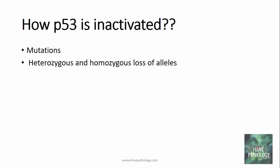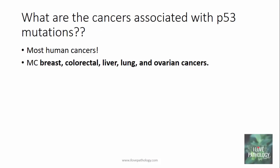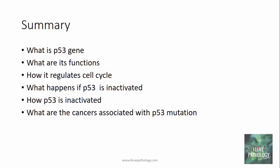How is the p53 gene actually inactivated? Basically, either by mutations or by loss of alleles — it could be heterozygous or homozygous loss of alleles. What are the cancers associated with p53 mutations? Most human cancers are associated with p53 mutations. Most commonly, breast carcinomas, colorectal carcinomas, liver, lung, and ovarian cancers are the ones most commonly implicated by mutations in p53 genes. In summary, we understood what p53 gene is, its functions, how it regulates the cell cycle, what happens if p53 is inactivated and how it is inactivated, and various cancers associated with p53 mutations.